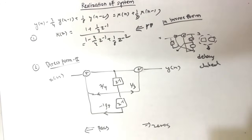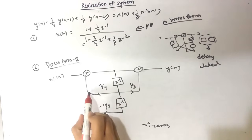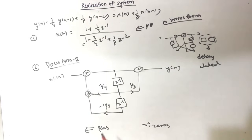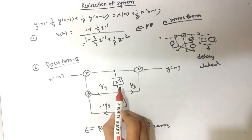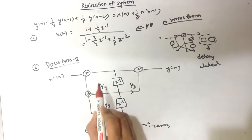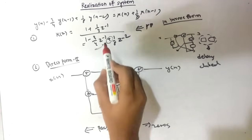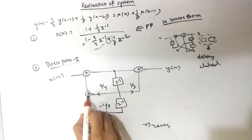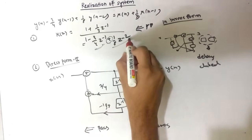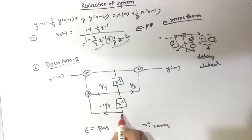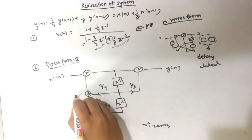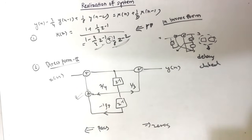One important correction: the adder connecting the Z⁻¹ term must have a plus sign, because this is where we obtain the Z⁻¹ contribution, and the Z⁻² term comes from the second delay. If you miss this plus sign, your answer will be wrong — so it is very important.